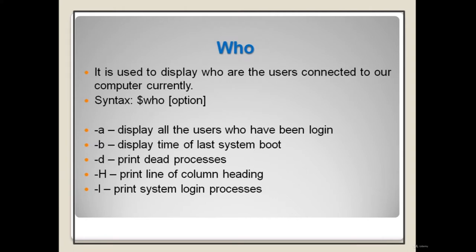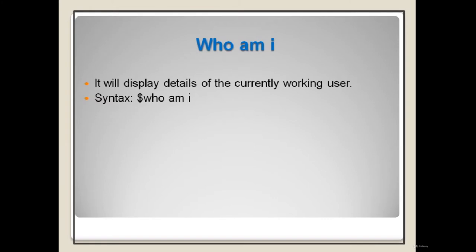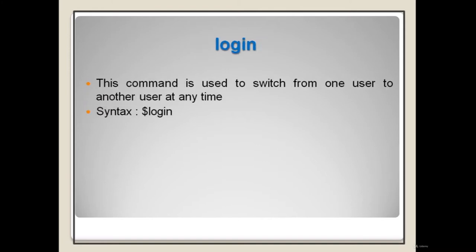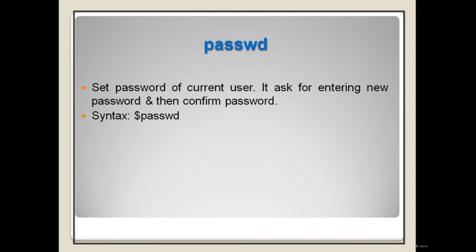These are some basic commands in Linux. The first is 'who', used to display which users are currently connected to the computer. Syntax is: who [option]. Options include: '-a' to display all users currently logged in, '-b' to display the time of the last system boot, '-d' to print dead processes, '-h' to print column headings, and '-l' to print system login processes.